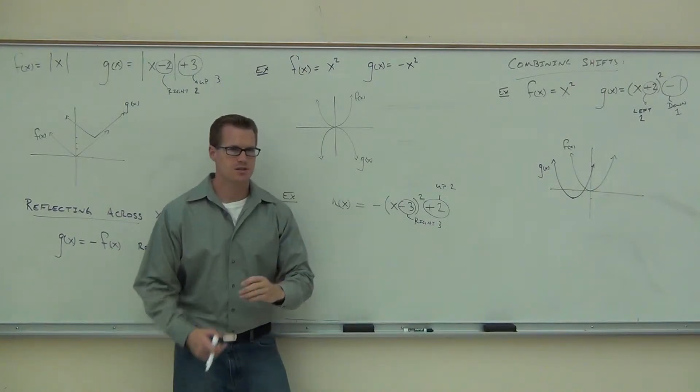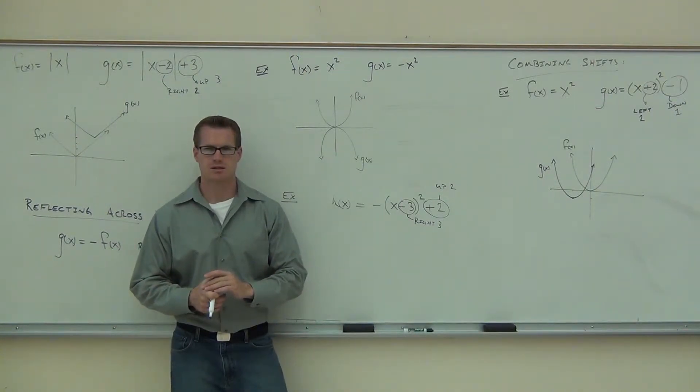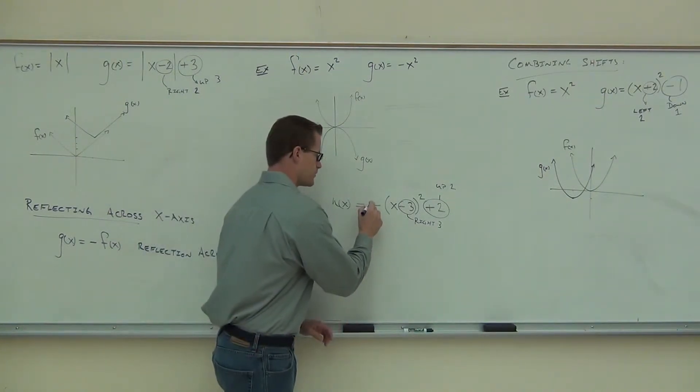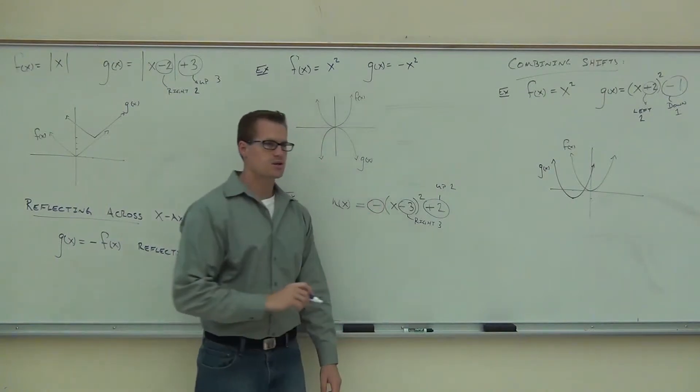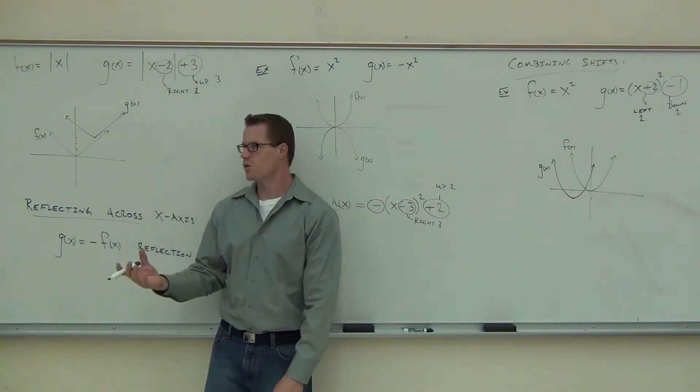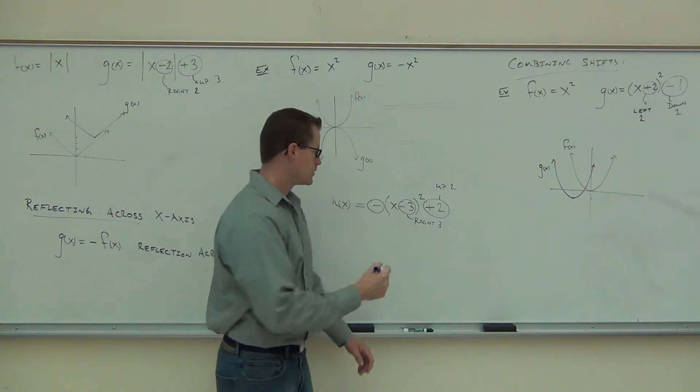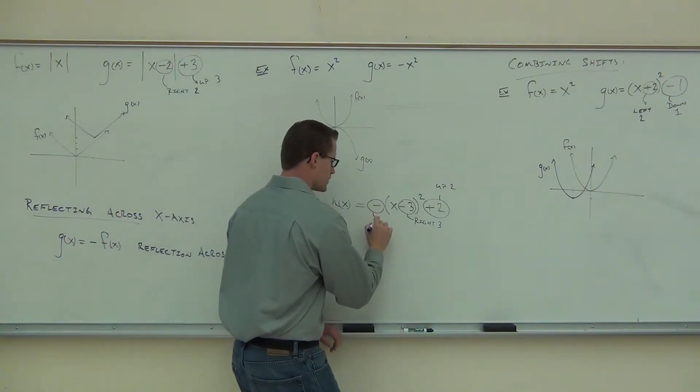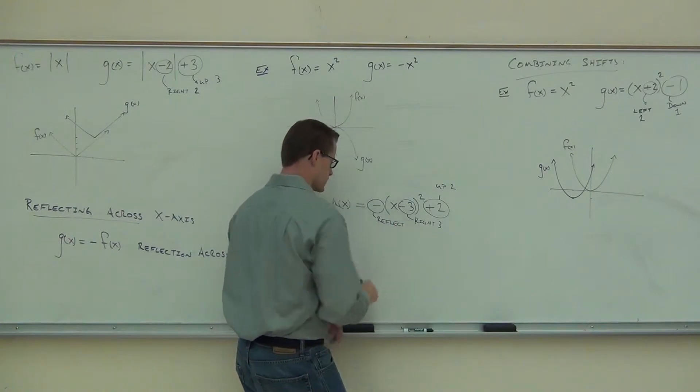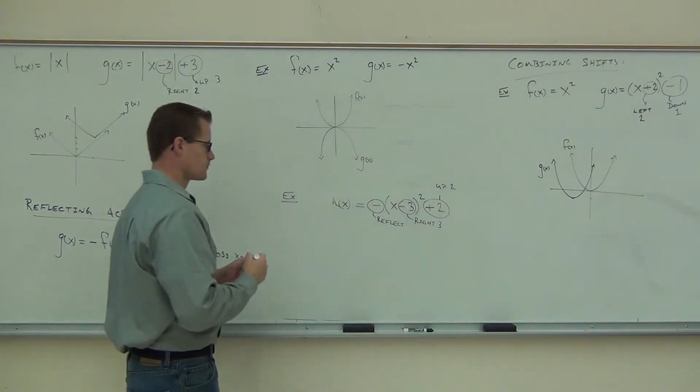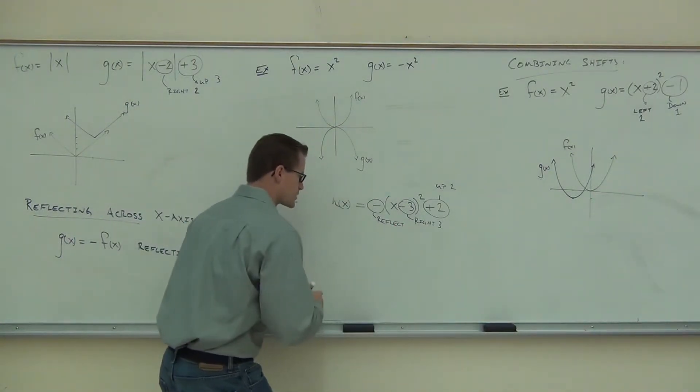And lastly, there's one more piece of this puzzle we have. What is it? Yeah, this negative here. That negative, when you see that, that's going to be a reflection. Or you're going to flip it over. So we'll put reflect. Reflect. Well, let's see how this turns out.